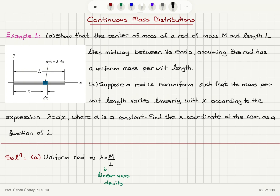The differential mass element dm will have a mass lambda times dx, its length. So the length of this mass element is dx. When we calculate the position of the center of mass x-coordinate for the extended object, we calculate 1 over M times the integral of x dm over the length of the object. This will be 1 over M times the integral of x, substituting lambda dx for dm, integrated from 0 to L.